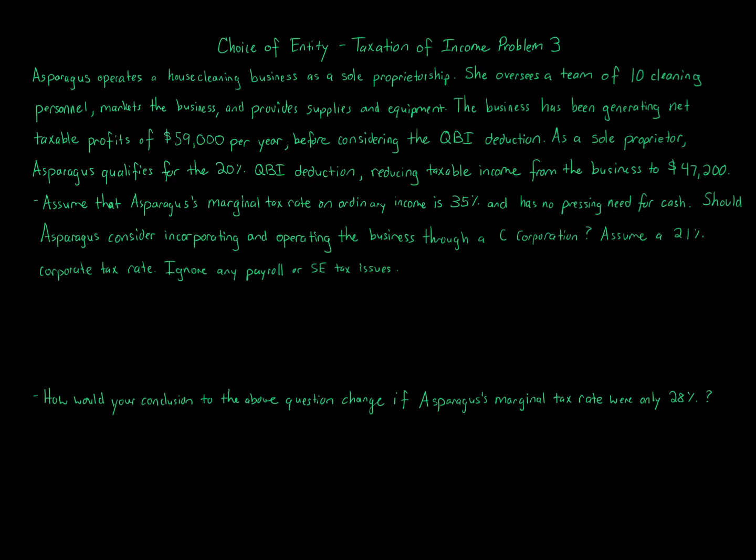As a sole proprietor, Asparagus qualifies for the 20% QBI deduction, reducing taxable income from the business to $47,200. Assume that Asparagus's marginal tax rate on ordinary income is 35% and she has no pressing need for cash. Should Asparagus consider incorporating and operating the business through a C corporation? Assume a 21% corporate tax rate. How would your conclusion change if Asparagus's marginal tax rate were only 28%?